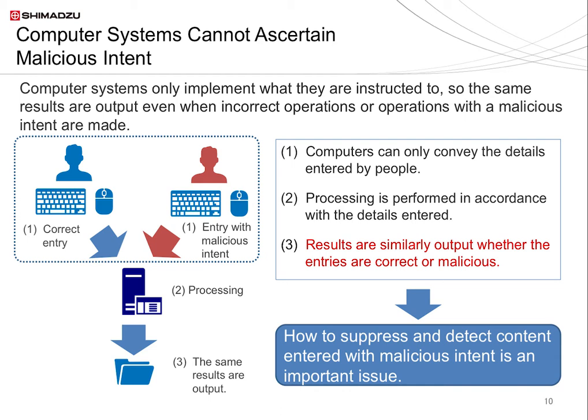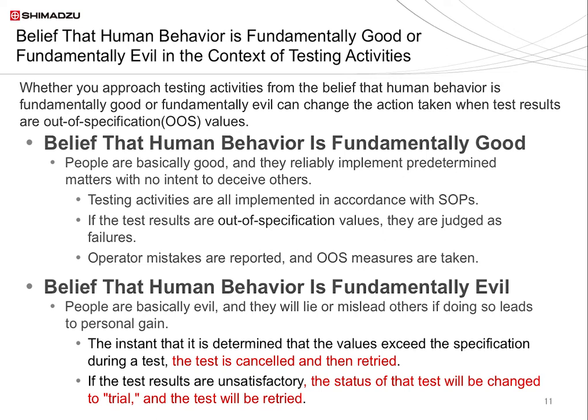I have introduced a red person into the figure. At first, the person enters the correct inputs according to procedure, but then decides to go against their better judgment and enters something else. Since the computer is unable to read the intentions of this person, it can only recognize and accept instructions. The computer system will process those instructions and output results in the same way, regardless of the person's intentions. So when we consider computer data integrity, we understand the most important challenge is how to prevent people from making malicious entries. People with ill intent can be described as malevolent operators, the antonym of which is a benevolent operator.